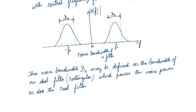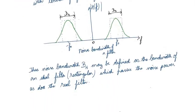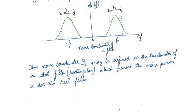In simple terms, it is the bandwidth of the ideal filter which passes the noise power as does the real filter.